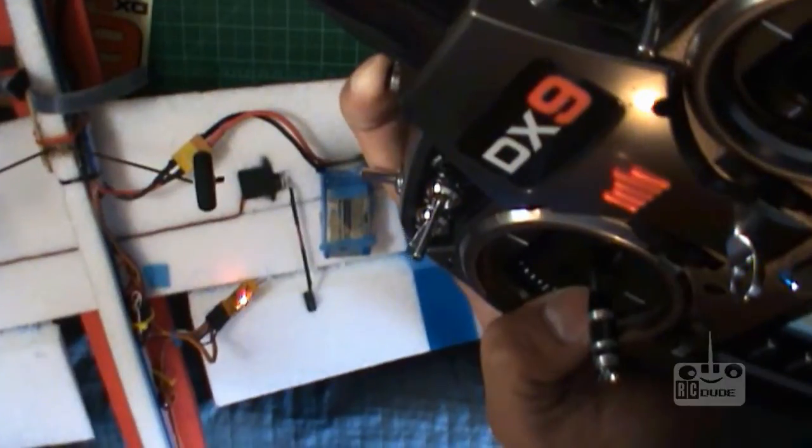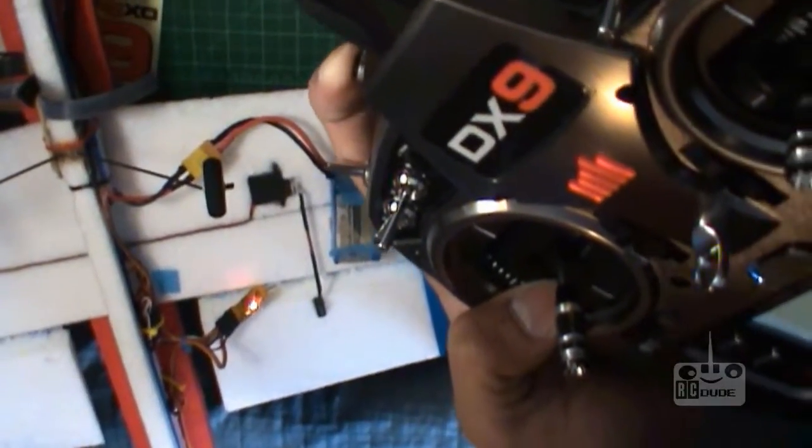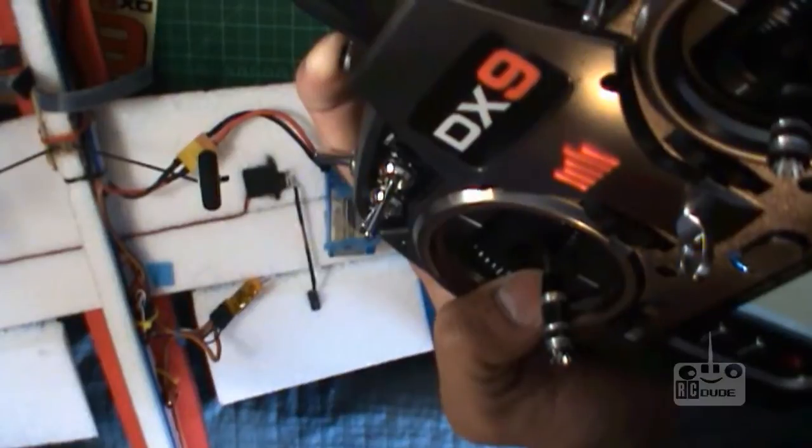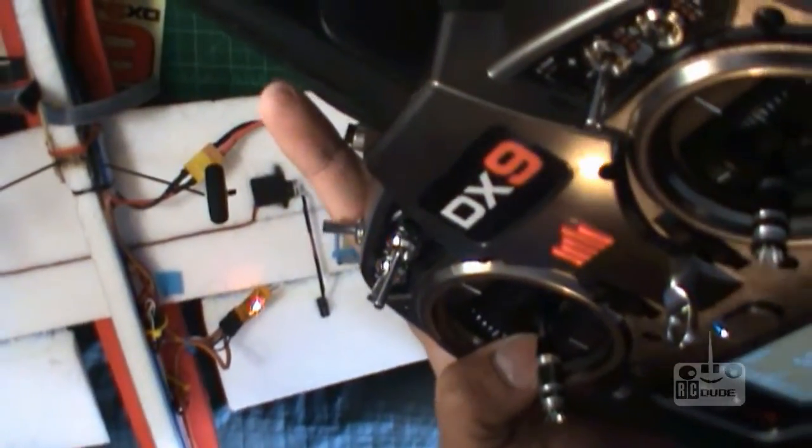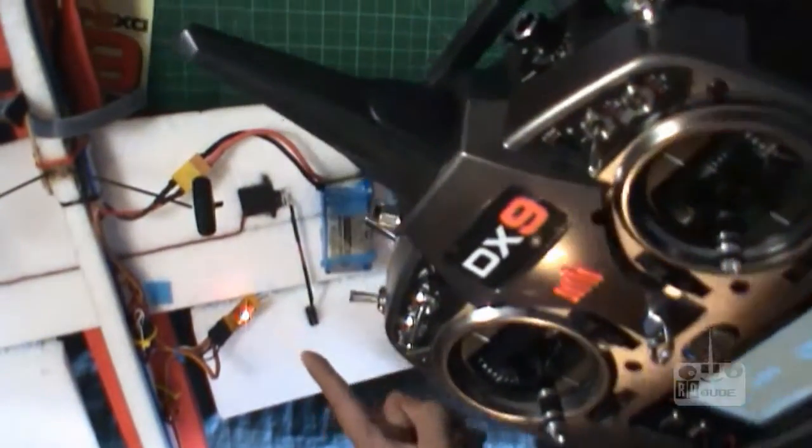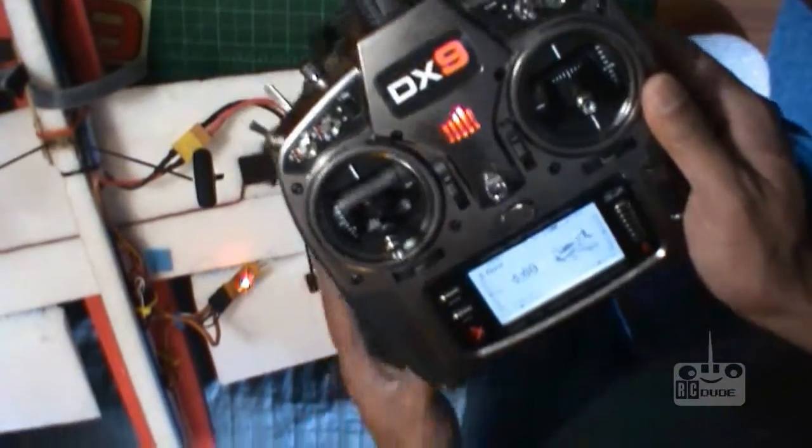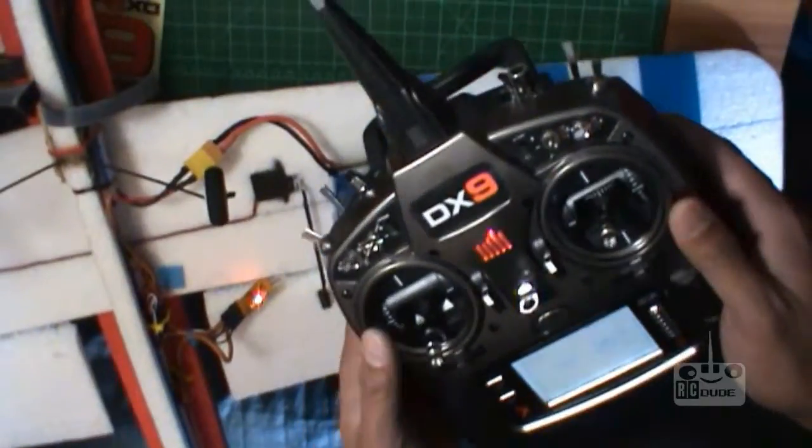Binding DSM2, 22 milliseconds, 1024 resolution. Bind complete. So you can see the binding is done and you can see the lights come on. It was not binding because it was too close to my transmitter. So if you have this problem, you put your transmitter away from there and it will be done.